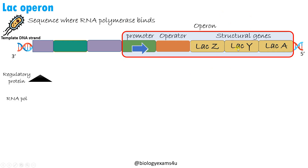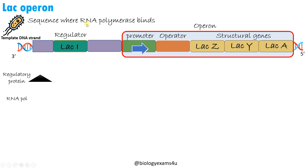An operon is a cluster of related genes under the control of a single promoter. The expression of these related genes is regulated together. Upstream of the promoter there is one more sequence called the regulatory sequence or regulator. In lac operon it is lac I, which codes for a lac repressor protein. This repressor protein can bind to the operator sequence.